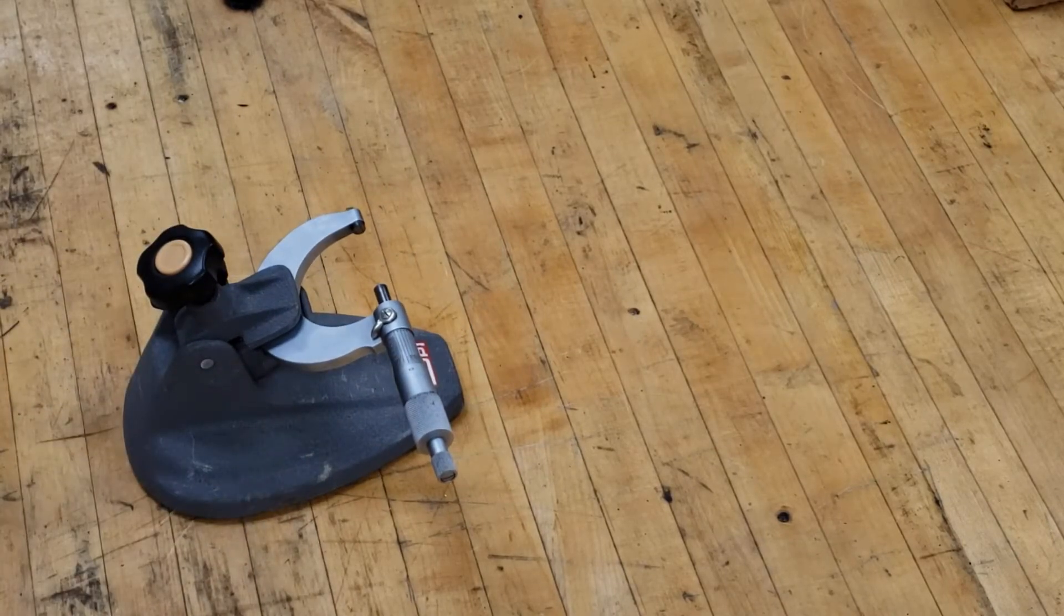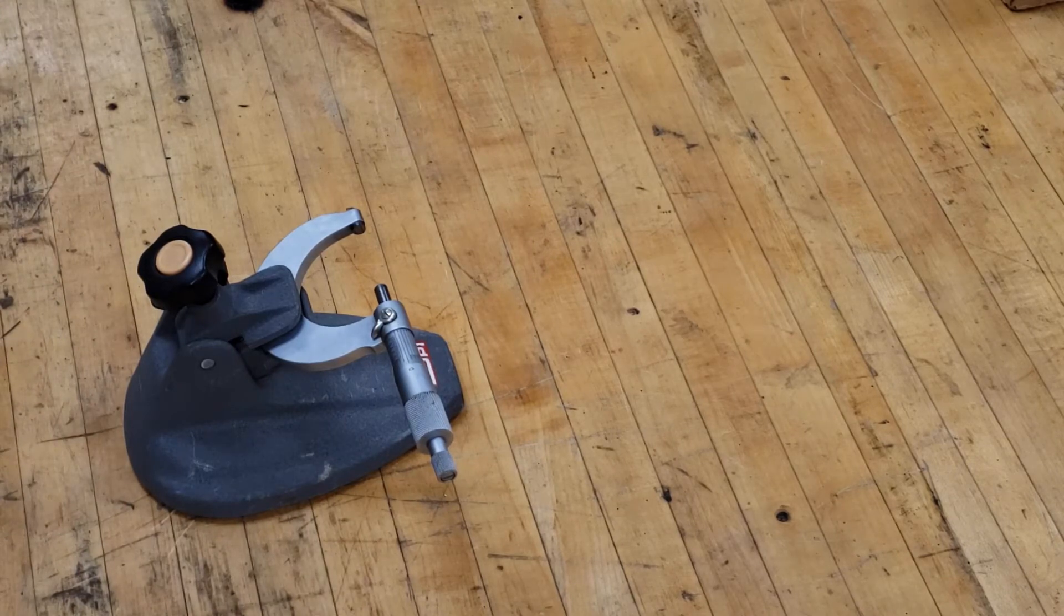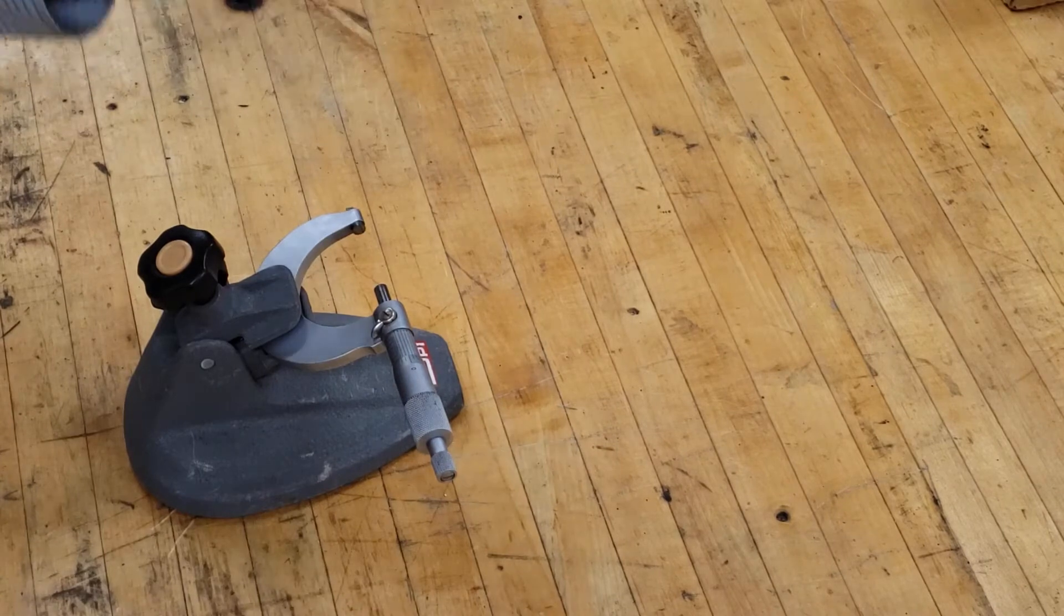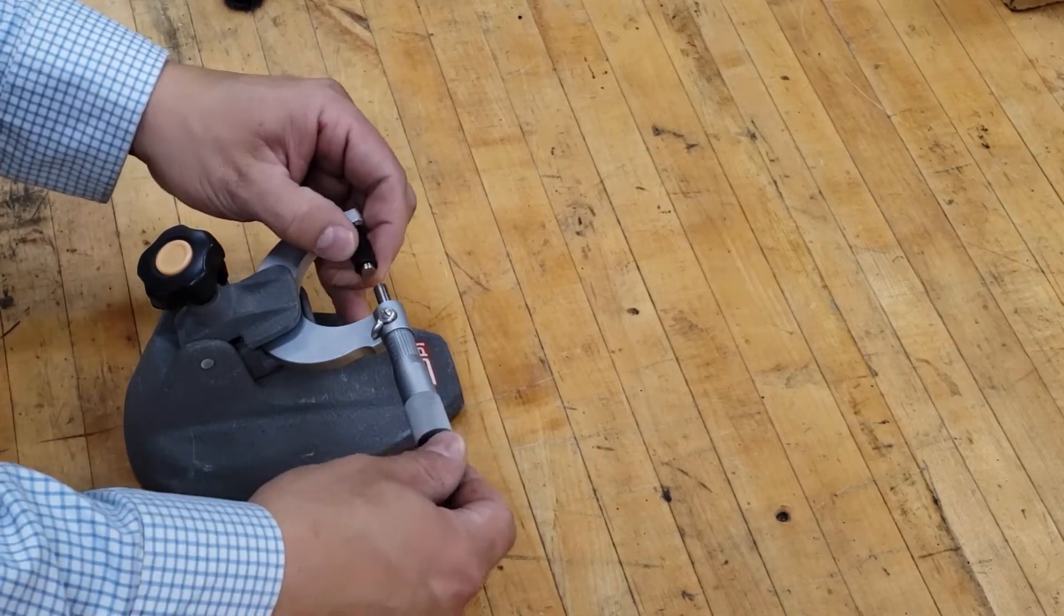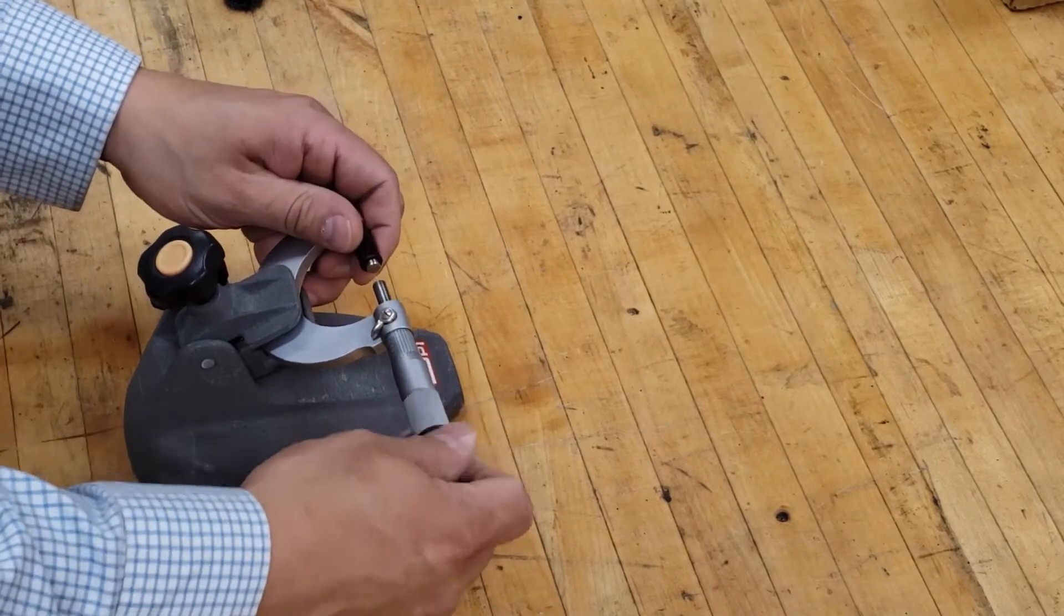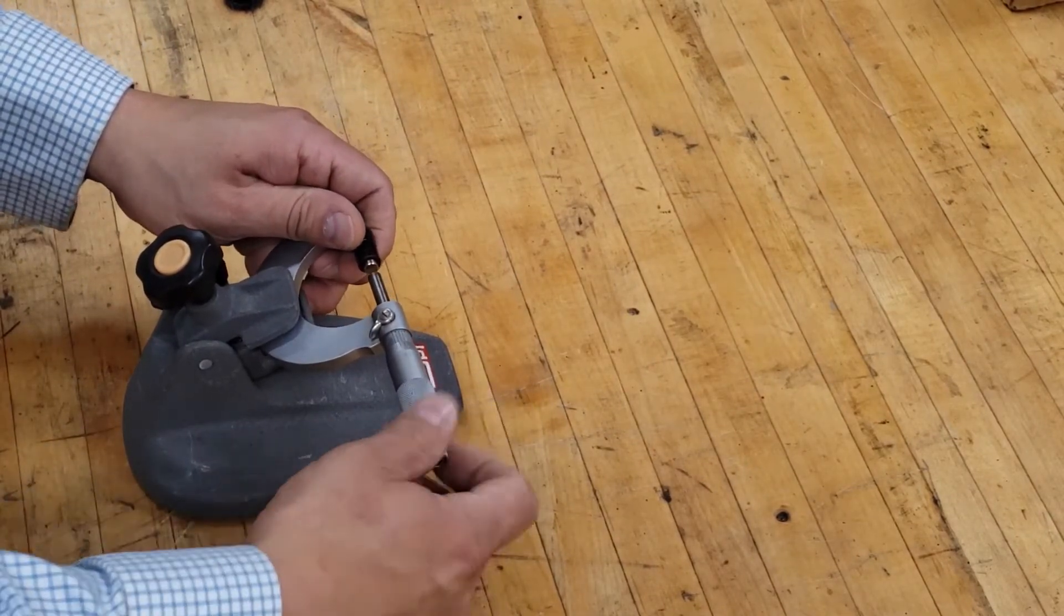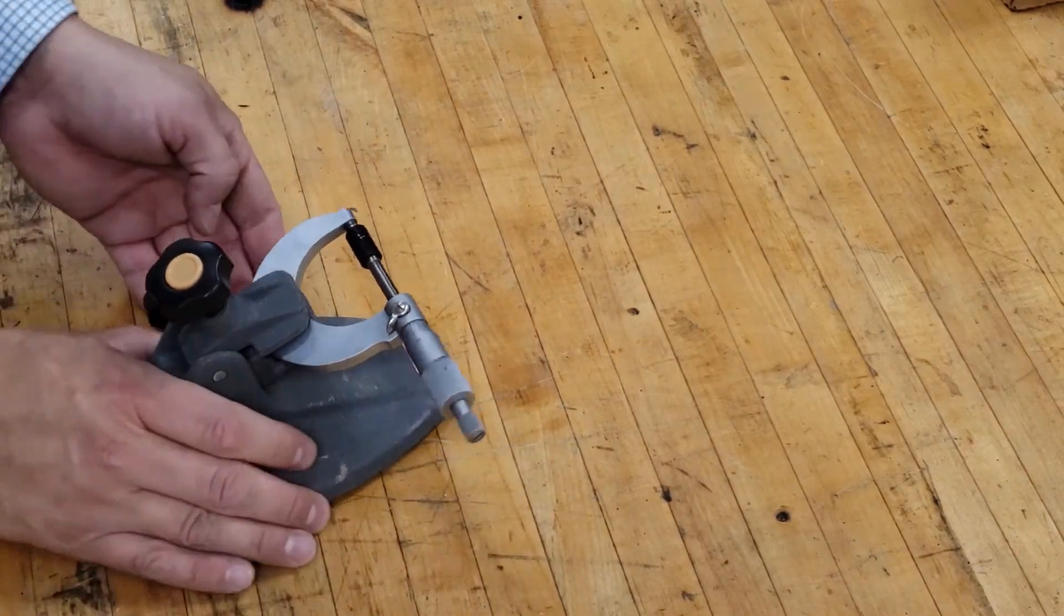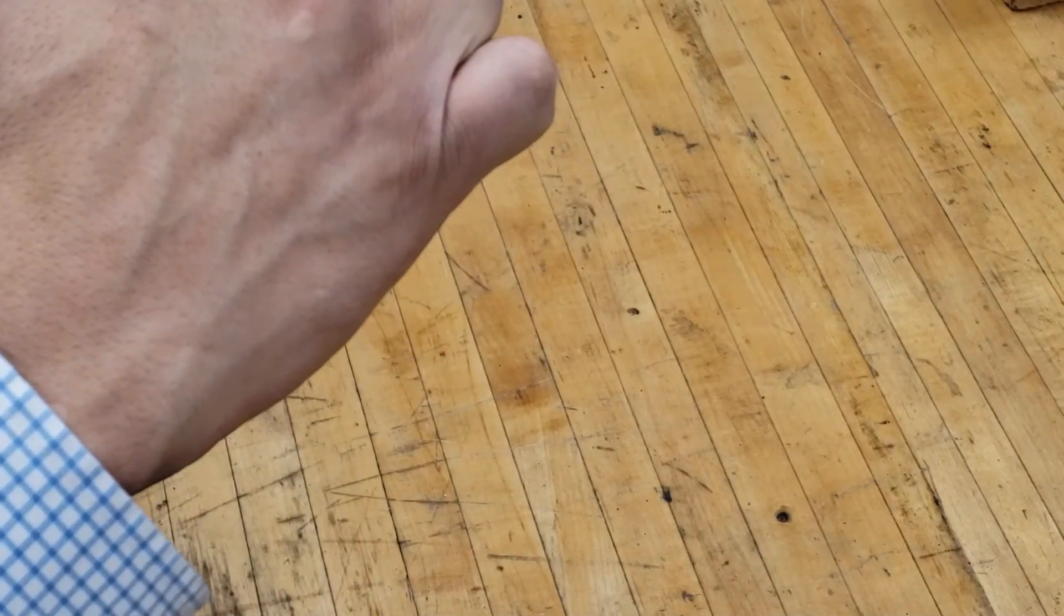For this measurement activity, you will start with making sure that the micrometer will zero out. So you get a one-inch pin gauge, close in on it, and you should see it come to really close to zero.